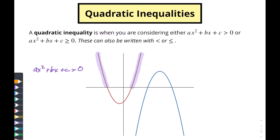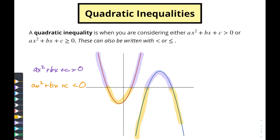Or if we want to say where ax squared plus bx plus c is less than zero, then we'd be looking down here in this space. This is really going to work the same way for this blue quadratic — when we're looking at where it's greater than zero, we're looking for what x values produce a y value greater than zero. If we're looking at where it's less than zero, we're looking down here, with these two parts going off to infinity.